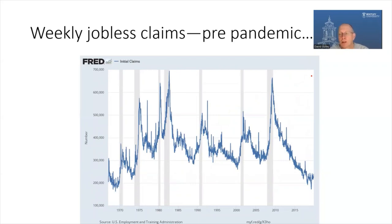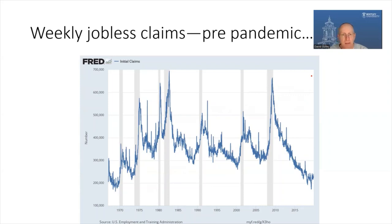Weekly jobless claims are a third rough indicator. One of the issues with the unemployment rate and payroll employment data is there's a bit of lag — they're released monthly, only the following month, so it's a slight looking backward. Weekly jobless claims look back effectively only one week. They're released every Thursday morning with only a one-week lag, giving the closest thing we have to a real-time indicator of what's happening in the labor market. The individual states collect data on the number of people who have filed unemployment claims after being laid off or fired.